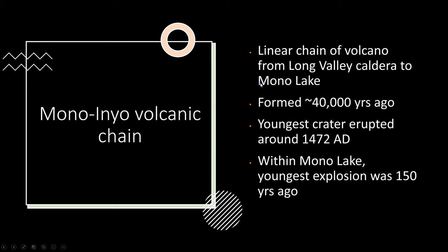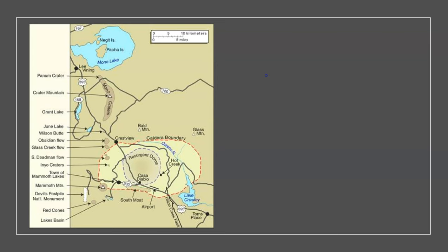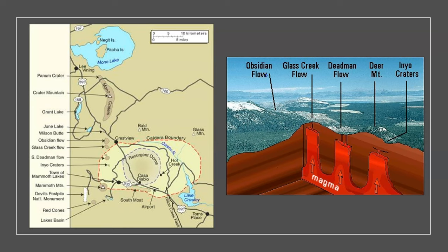The Mono-Inyo volcanic chain is a linear chain of volcanoes extending from Long Valley Caldera to Mono Lake. These formed 40,000 years ago, and the youngest crater erupted in 1472 A.D. Within Mono Lake, the youngest explosion was 150 years ago. The mono craters extend in a linear fashion from the northern caldera boundary, suggesting a main magma chamber with feeders in a linear arrangement — we also see this with Moro Rock in the Coast Ranges.